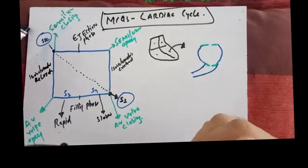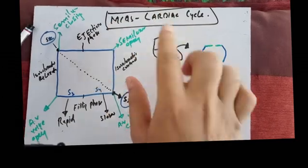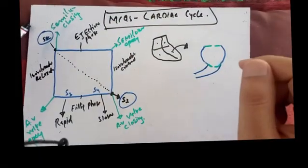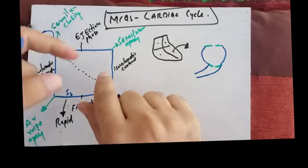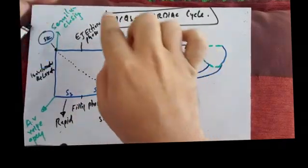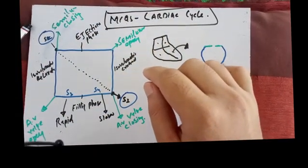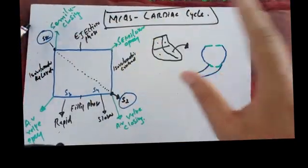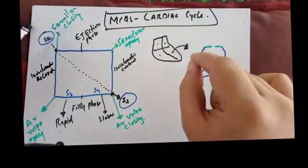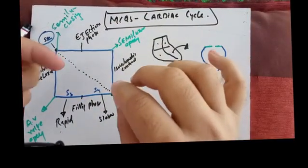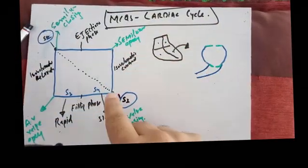Bismillahirrahmanirrahim. Today we will discuss the MCQs coming from the cardiac cycle. These are very important. In order to understand these MCQs, we must know about this diagram. If we know about this diagram, we can answer all the MCQs very easily, because photographic memory lasts longer.